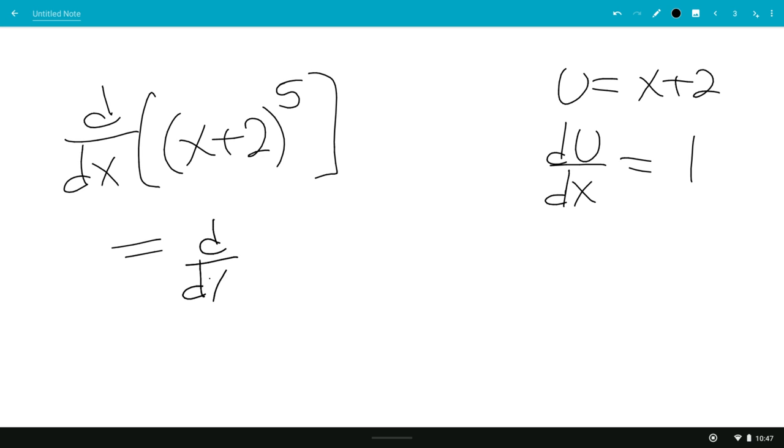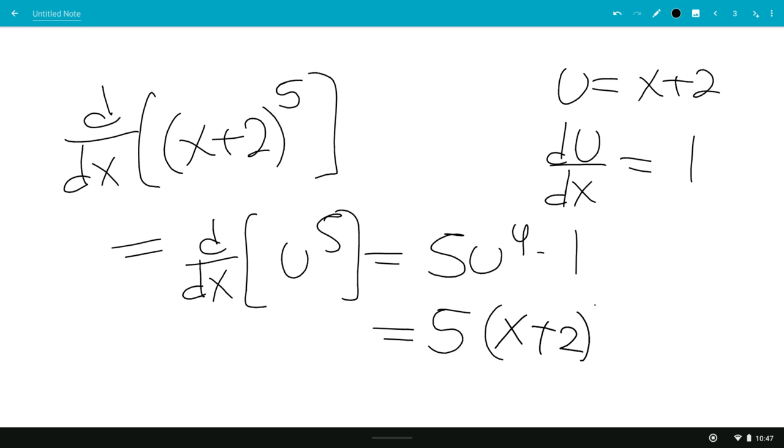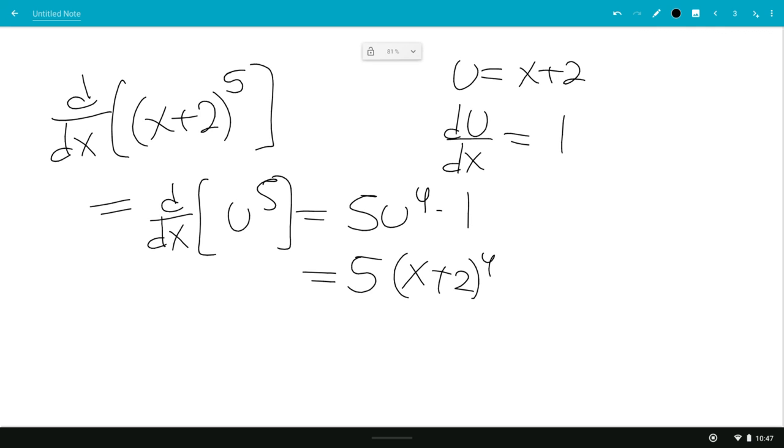This will be the derivative of u to the fifth, which is 5 u to the fourth, times du dx, which is 1. So this will just be 5 times u, which is x plus 2, to the fourth power. So that would be the answer to this question.